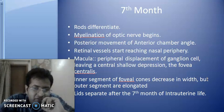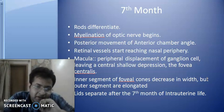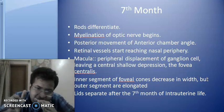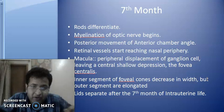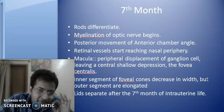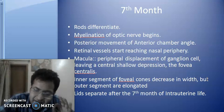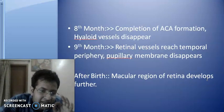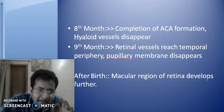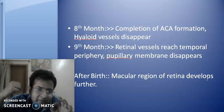The inner segments of the foveal cones decrease in width, but the outer segments are elongated. The inner and outer segments become thicker and elongated, forming Henle's layer. The lid separation is completed at the seventh month of intrauterine life. At the eighth month, there is completion of anterior chamber angle formation and the hyaloid vessels disappear. At the ninth month, the retinal vessels reach the temporal periphery and the pupillary membrane disappears.